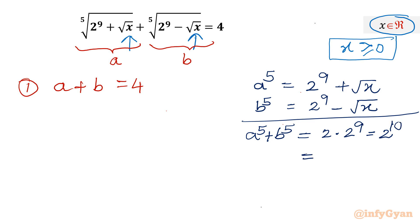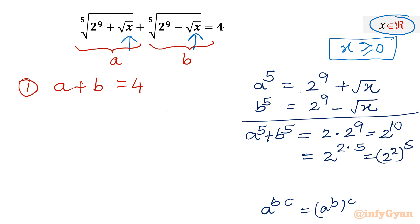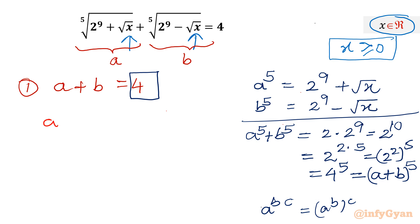Using the exponent property, I can write 2 to the power 10 as 2 to the power 2 times 5. Using the property a^(b·c) = (a^b)^c, this becomes 2 squared, whole to the power 5, which is 4 to the power 5. Now, 4 is a plus b. So we have a⁵ plus b⁵ equal to (a plus b) to the power 5. This is something very important we have established.